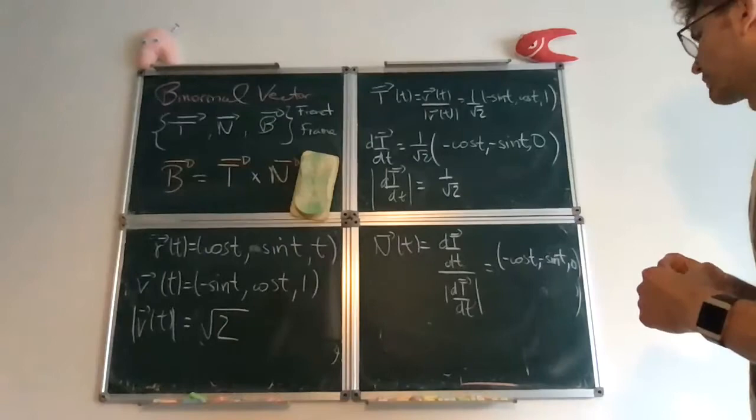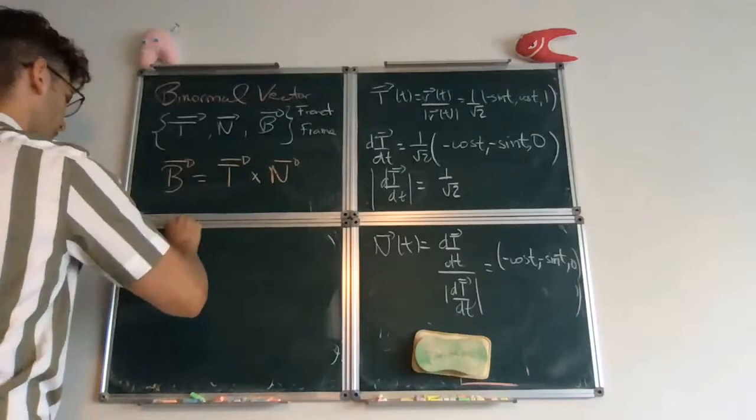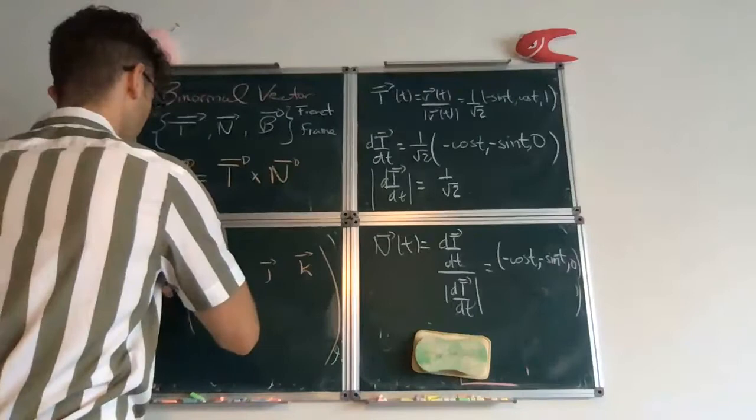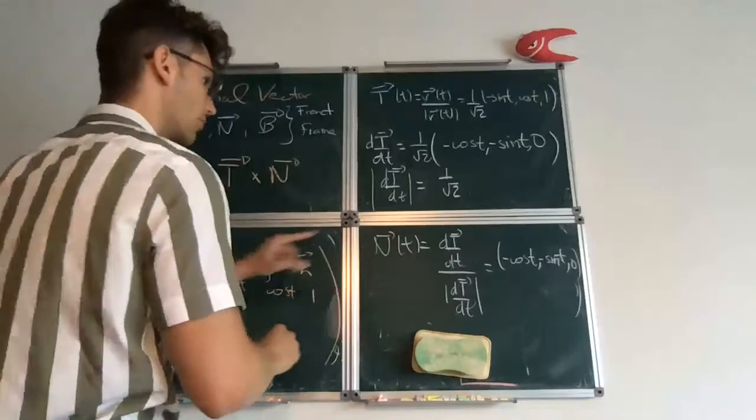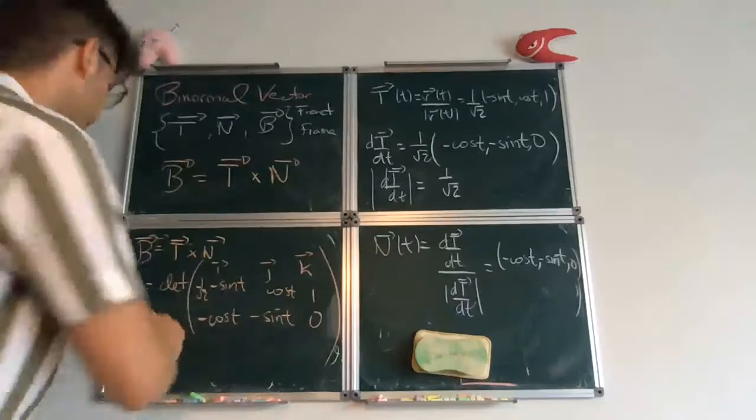And finally, the binormal vector is just a cross product of these two. So the binormal vector is, let's do it with the determinant formula. i, j, k. Tangent is 1 over root 2 times minus sine of t, cosine of t, 1. Normal was minus cosine of t, minus sine of t, 0. And so this gives you sine of t.